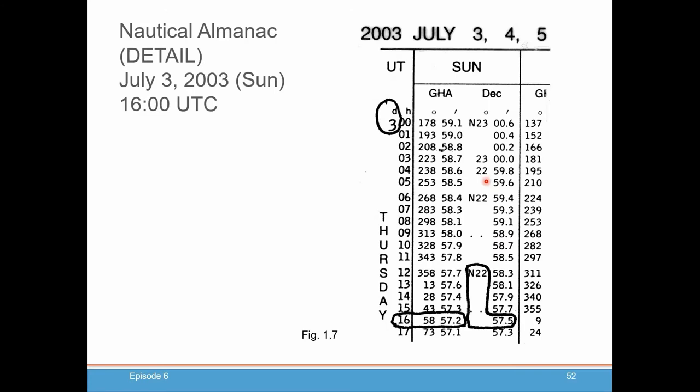So let's get down to details. Let's say we wanted to know where the sun is on July 3rd, 2003, at 1600 UTC. So you would open your Almanac to July 3rd, 4th or 5th. You look at the section for July 3rd. You see the day there. And these are your hours. So we want to go down to 16 hours UTC. And you can cross over. And the first column will tell you your GHA, basically your longitude, 58 degrees, 57.2 minutes. And if you forget what those are, up here is your degrees. And here is your minutes.